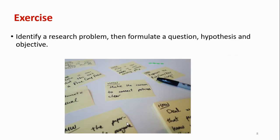To help you understand this better, here is an exercise. Spend about 10 minutes brainstorming: think about a research problem, then formulate a research question, a hypothesis, and an objective. After that, we can discuss it, or you can send it to me by email. I would also advise you to watch the other videos I posted about research questions, research problems, and why research is really cool and interesting. Thank you very much.